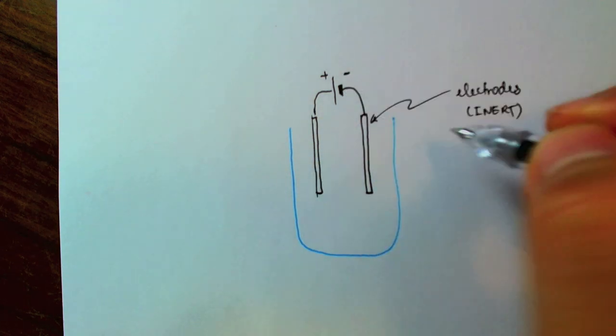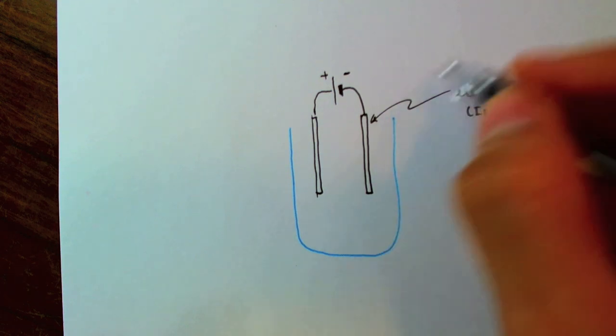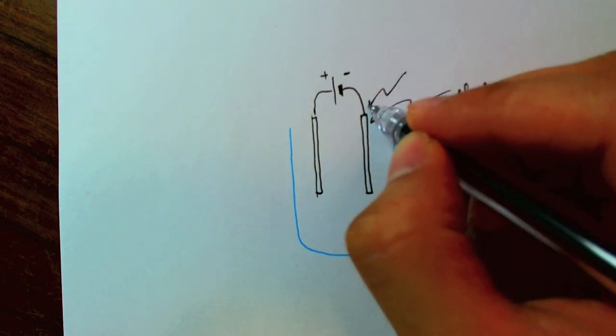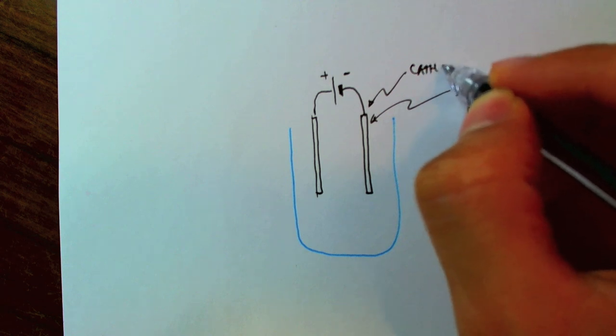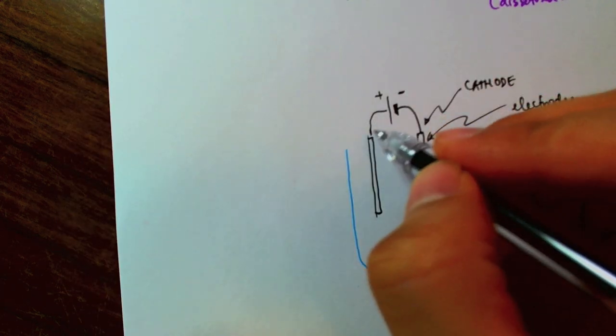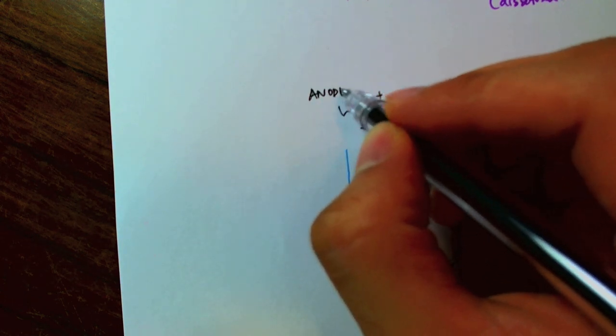And the electrode that's connected to the negative end of the battery, we call that the cathode. While the electrode that's connected to the positive end of the battery, that's the anode.